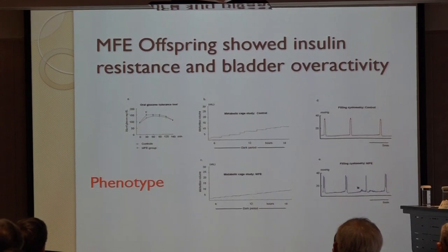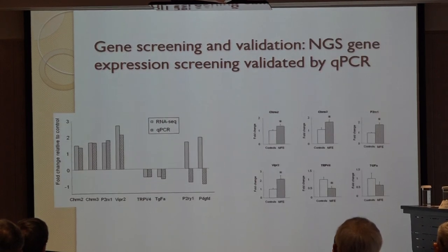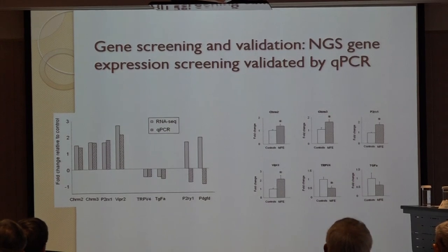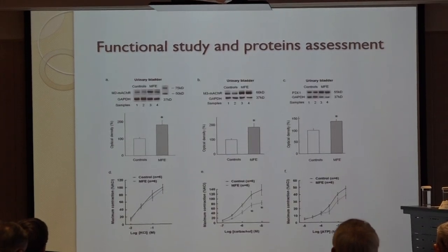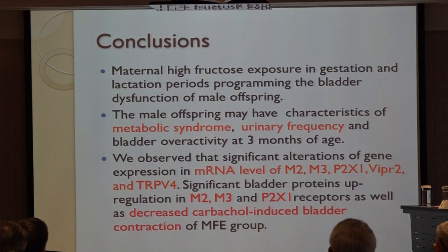The result is also straightforward: we found a phenotype of metabolic syndrome and insulin resistance, and we observed bladder overactivity in the rats. We then performed a large gene screening by next-generation sequencing and qPCR validation, and performed protein assay and functional assay in cystometrography.